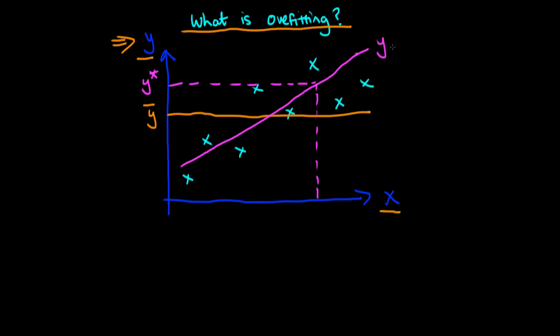So for clarity, this pink line is of the form y equals alpha plus beta x, whereas this more simple model is just that y is equal to y bar.